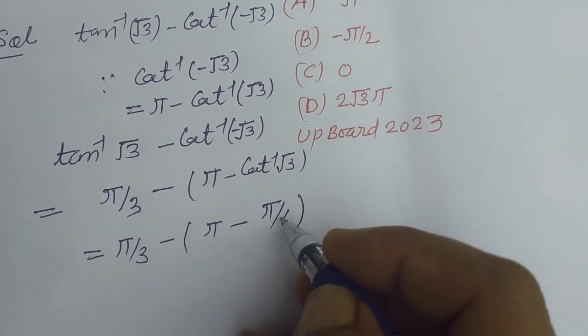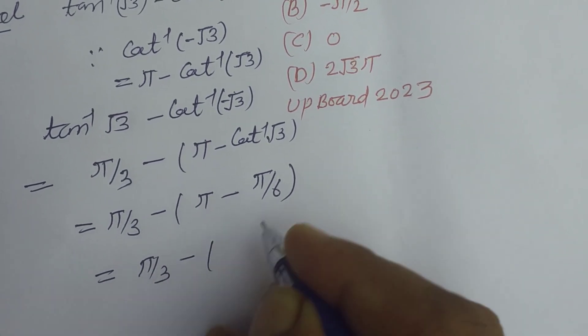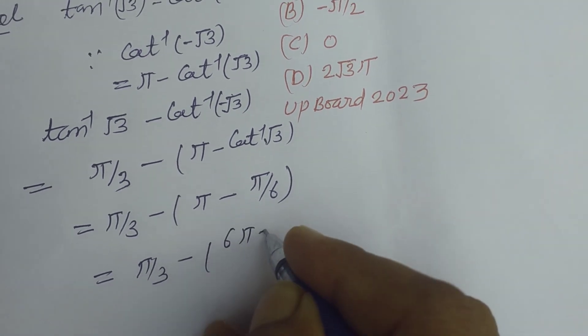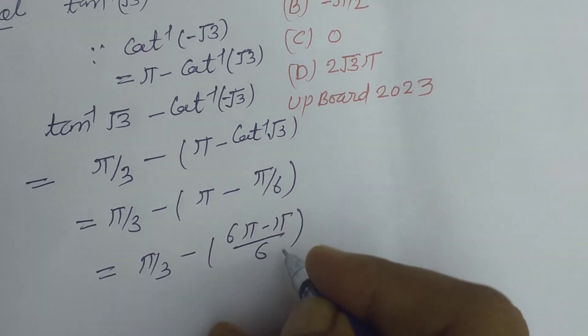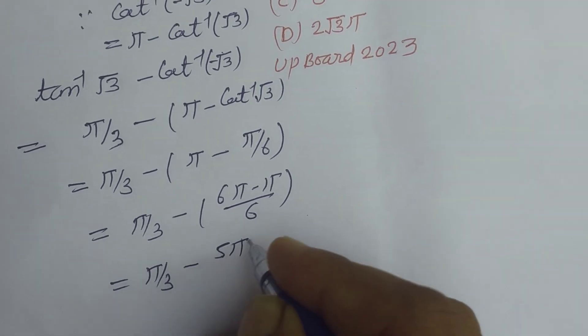So solving this: π/3 minus [π - π/6], which equals π/3 minus 5π/6.